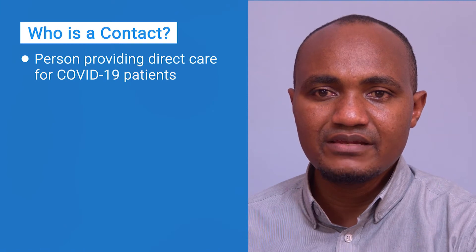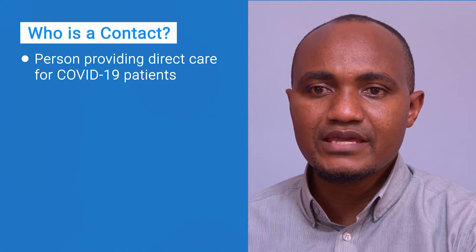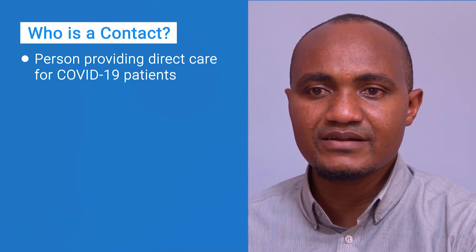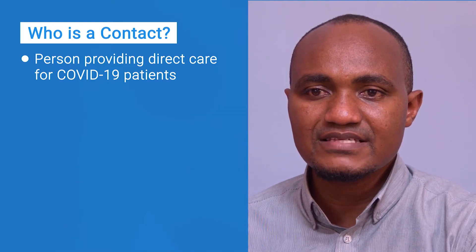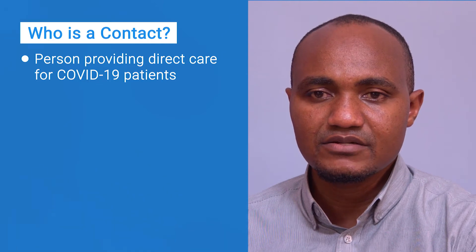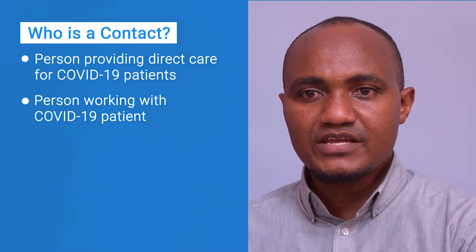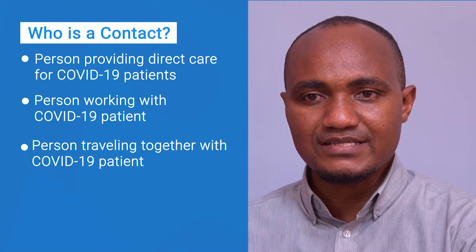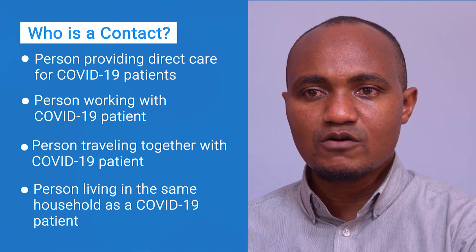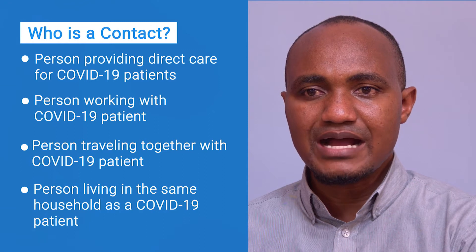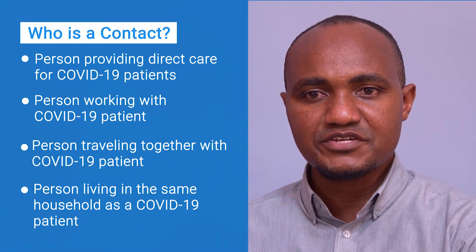Who is a contact and what is contact tracing? A contact is any person involved in providing direct care for COVID-19 patients, working with healthcare workers infected with novel coronavirus, visiting patients or staying in the same close environment of a COVID-19 patient, working together in close proximity or sharing the same classroom environment with a COVID-19 patient, traveling together with a COVID-19 patient in any kind of conveyance, or living in the same household as a COVID-19 patient within a 14-day period after the onset of symptoms in the case under consideration. Contact tracing involves the identification of all people in the chain of transmission of the disease through direct or indirect contact with a COVID-19 patient.